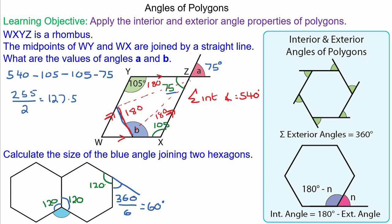So because the three angles here are joined around a point, it would be 360 minus 120 minus 120. So the blue angle would be 360 minus 240, which equals 120 degrees.